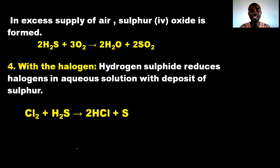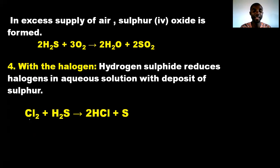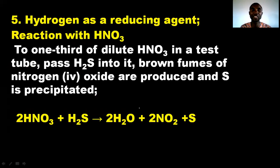Regarding reaction with halogens: hydrogen sulfide reduces halogens in aqueous solution, with deposits of sulfur. For example, it reduces chlorine to hydrogen chloride and sulfur is also deposited. It can similarly react with bromine and iodine, reducing them to hydrogen bromide or hydrogen iodide respectively, with sulfur deposited in each case.